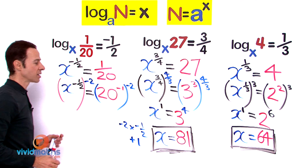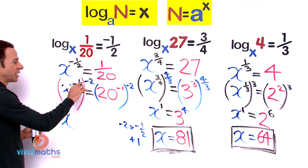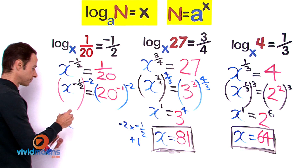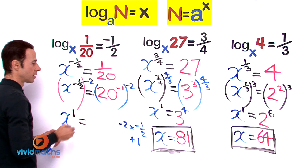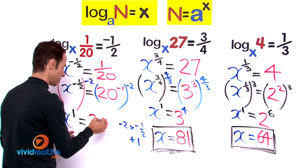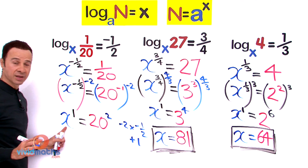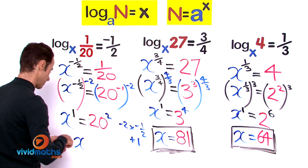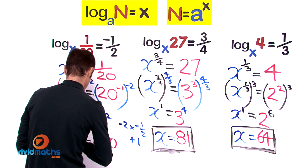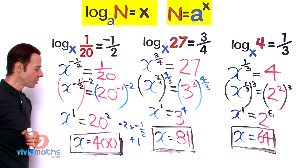With both sides raised to the power of negative 2, on the left: x to the power of negative 1 half times negative 2 — negative times negative is positive — gives x to the power of 1. On the right: 20 to the power of negative 1, raised to negative 2 — negative times negative is positive — gives 20 to the power of positive 2, which equals 400. So the missing base x equals 400.